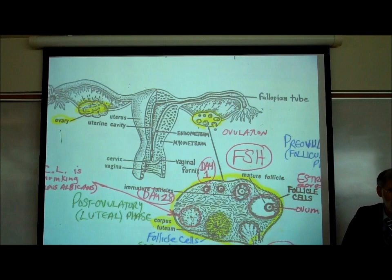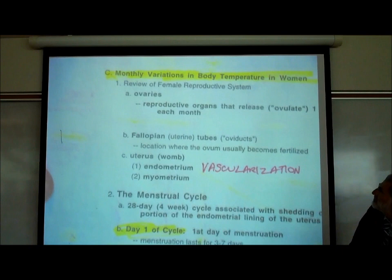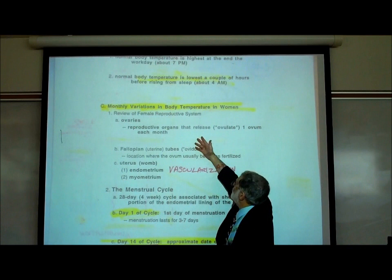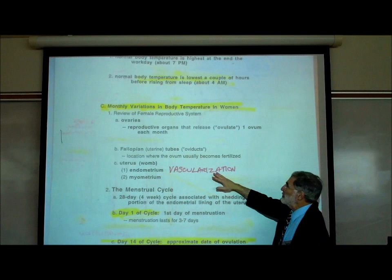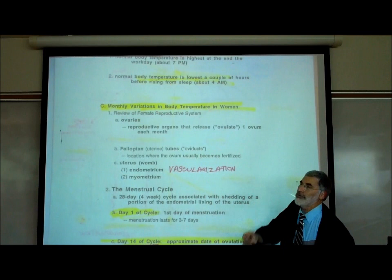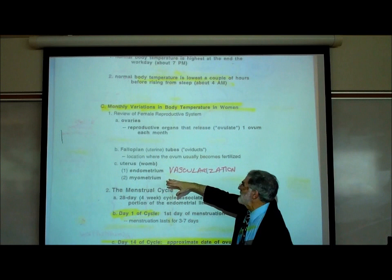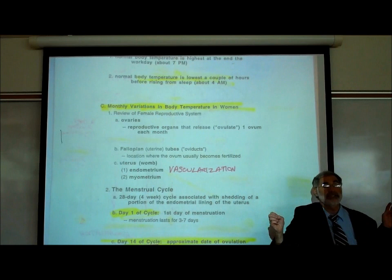On page C9, reviewing the female reproductive system: the ovaries are the reproductive organs that ovulate one ovum each month. The fallopian tubes — also called uterine tubes or oviducts — are where an egg is fertilized. If conception occurs, the sperm unites with the egg in the fallopian tube, not in the uterus. The uterus, or womb, is made up of an inner lining where vascularization occurs, and an outer myometrium, the muscular layer.